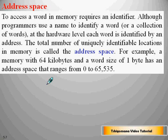The total number of uniquely identifiable locations in memory is called the address space. For example, a memory with 64 kilobytes and a word size of 1 byte has an address space that ranges from 0 to 65535.